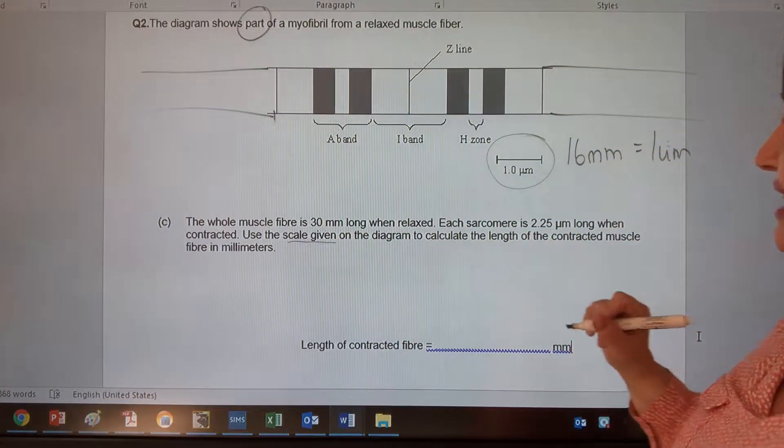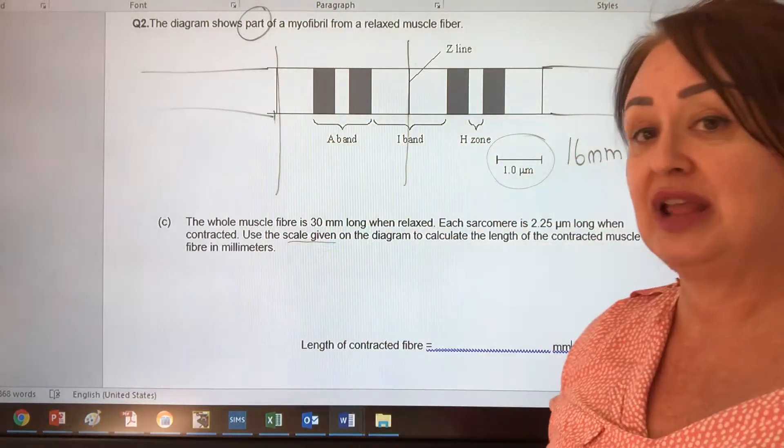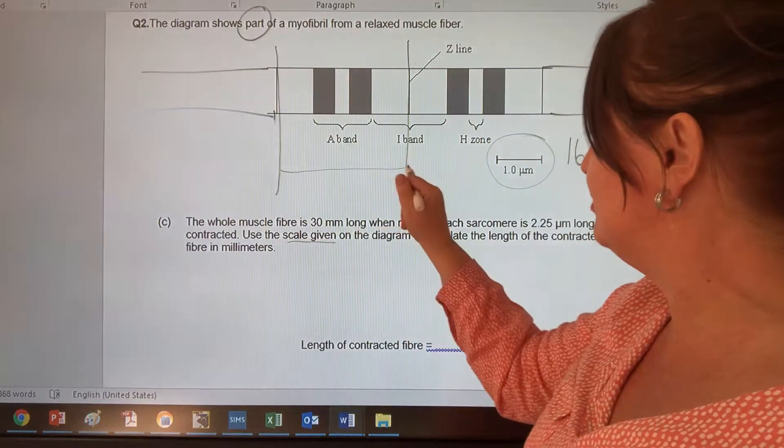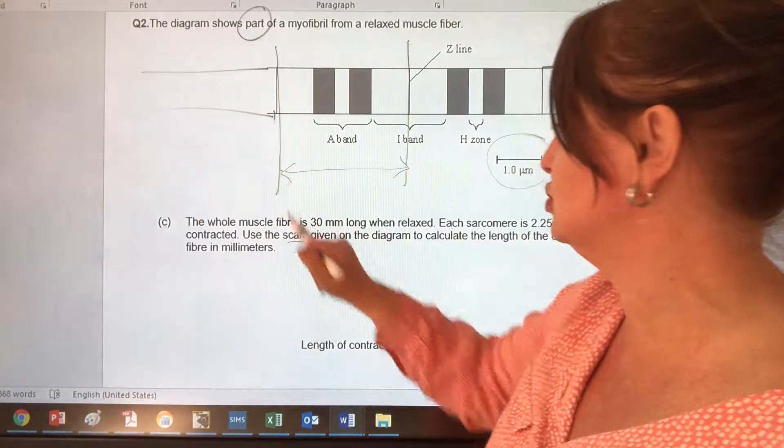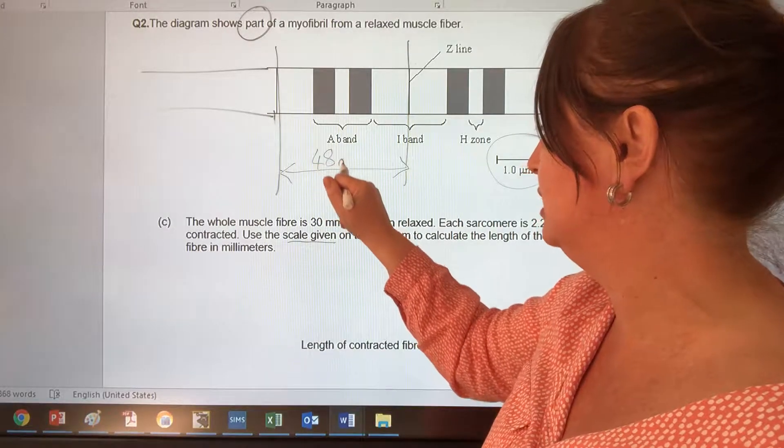So what I can then say is, okay, well let's measure this sarcomere. And with a ruler, when I measure this, which is my relaxed muscle fiber, I find that it is 48 millimeters.